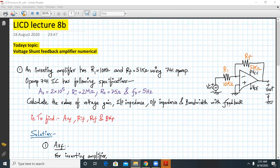We are given a numerical statement as: an inverting amplifier has R1 equal to 10 kilohm, Rf equal to 51 kilohm. The circuit diagram is also given using 741 op-amp, and the 741 IC has the following specifications: the open loop gain is 2 into 10 to the 5, Ri is 2 megaohms, Ro is 75 ohms, and F0 is 5 hertz.